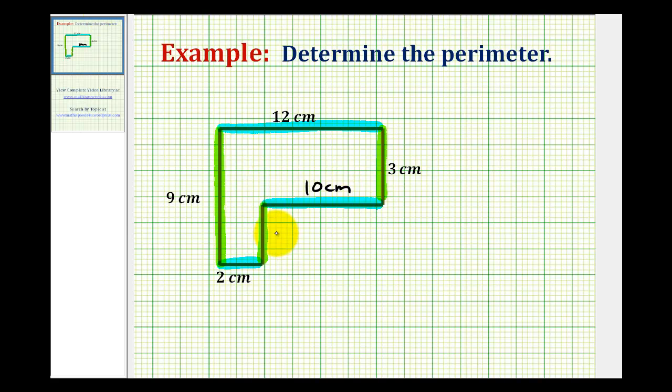So obviously this diagram is not to scale, but we do have to base our answer on the given information. Now that we have the length of each side, we just need to find the sum of these lengths to determine the perimeter of this polygon.